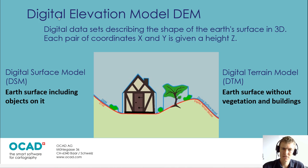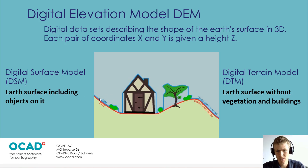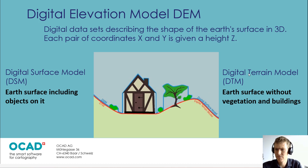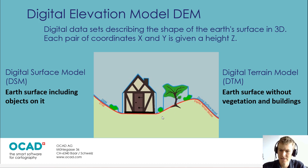A digital surface model, here in blue, DSM, is the earth including objects on it. So it describes the earth's surface including, for example, vegetation and buildings. Whereas the digital terrain model, DTM, is only the surface without any vegetation and buildings. You can see it in red here.